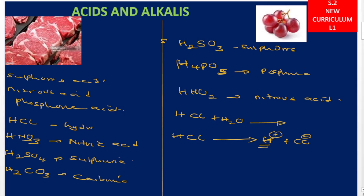So an acid is that substance which, when dissolved in water, produces hydrogen ions as positively charged ions. In this lesson we focused on the chemistry definition of an acid, and we looked at examples of mineral acids such as hydrochloric acid, nitric acid, sulfuric acid, carbonic acid, sulfurous acid, phosphoric acid, and nitrous acid. An acid produces hydrogen ions as the only positively charged ions when dissolved in water.